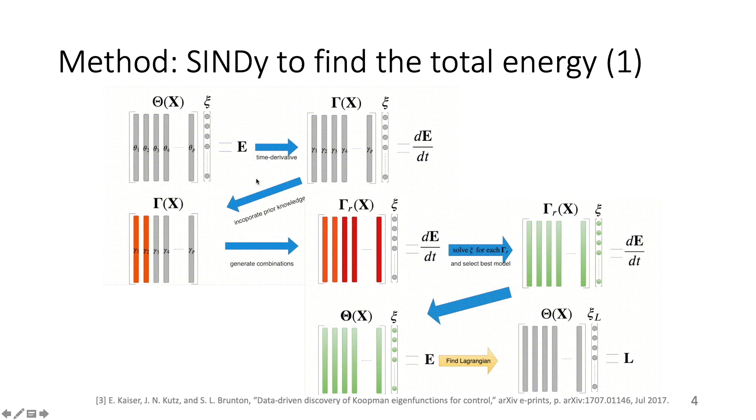Next, the matrix gamma, which is the time derivative of the matrix theta, is calculated using the chain rule, and the product gamma c should be comparable to the change of the total energy. In the subsequent steps, we mark known terms which appear in simple systems that form the complex system in orange, then select a few terms from the rest of the terms and combine them into a reduced gamma matrix.